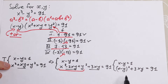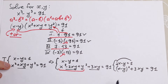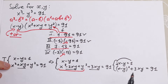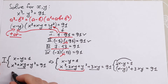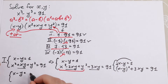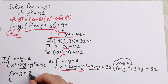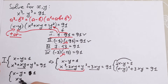Substituting x minus y equals 1 into the rewritten equation: 1 squared plus 3xy equals 91, so 3xy equals 90, giving xy equals 30. Our system becomes: x minus y equals 1 and xy equals 30.